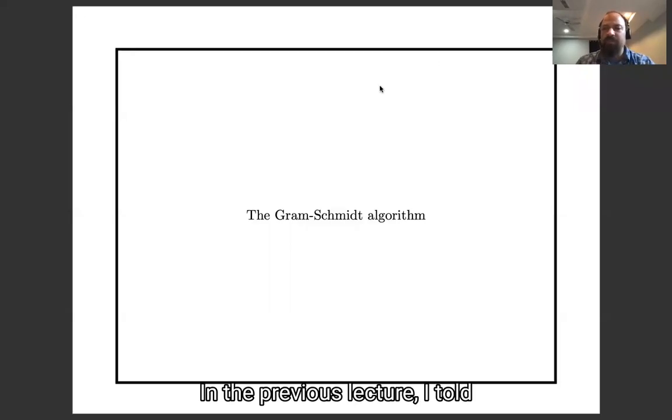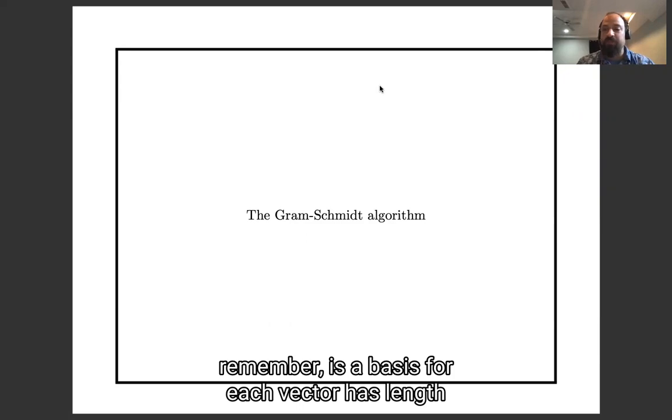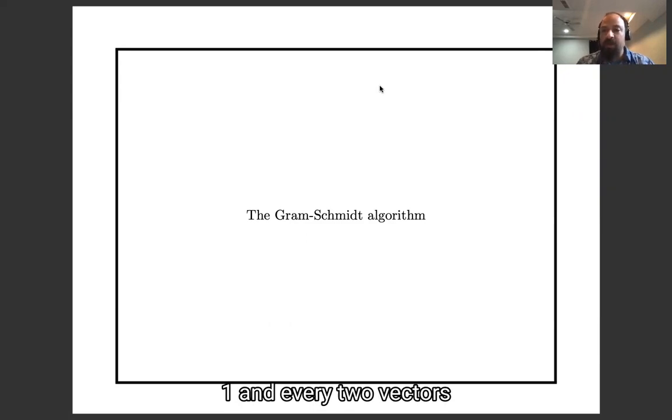Hello again. In the previous lecture, I told you about orthonormal bases. An orthonormal basis, remember, is a basis where each vector has length one, and every two vectors are perpendicular to each other.